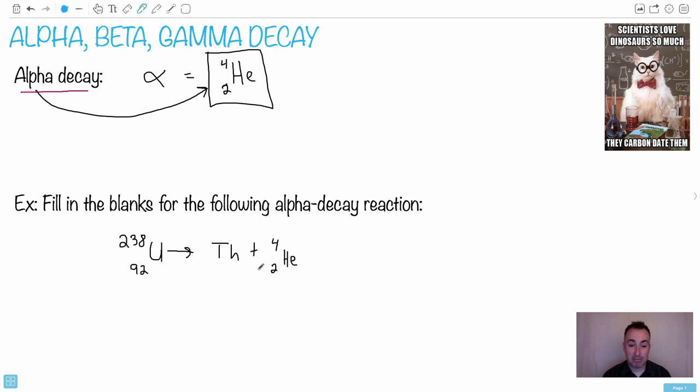So all you have to do is add or subtract. It's that easy. We know that something plus 2 has to equal 92. So it has to be conserved. So it must be 90 protons needed because 90 plus 2 gives you 92. Same over here, 238. Well, something plus 4 equals 238. So hopefully you see it's 234.